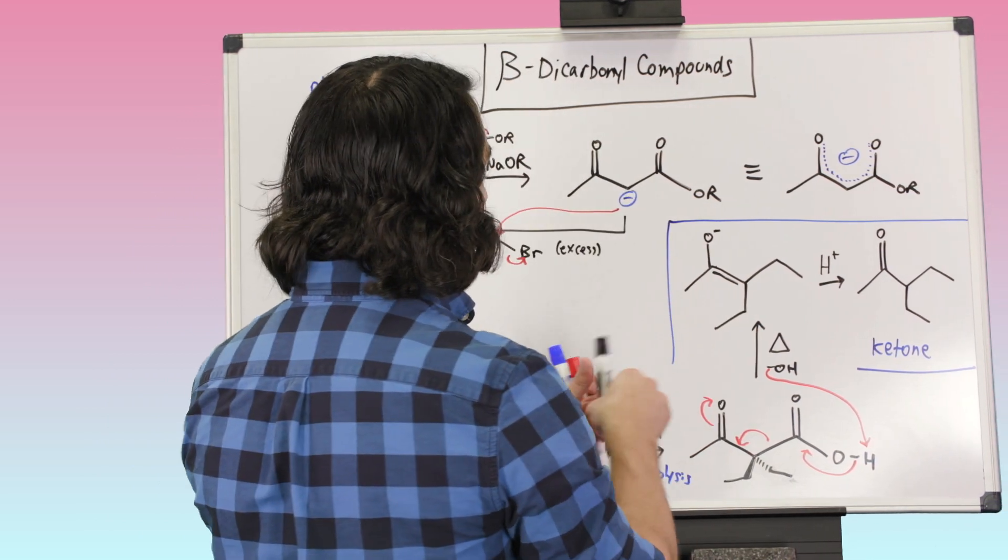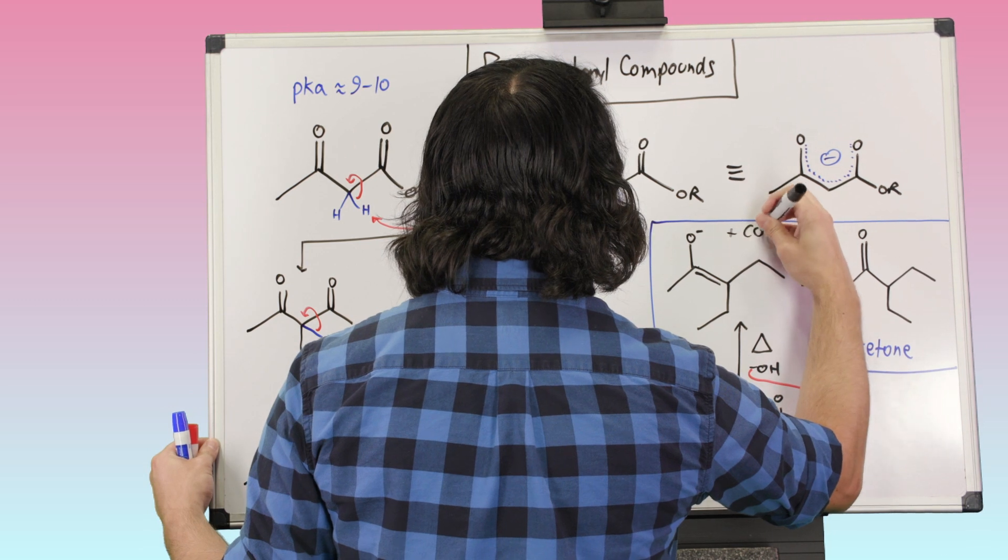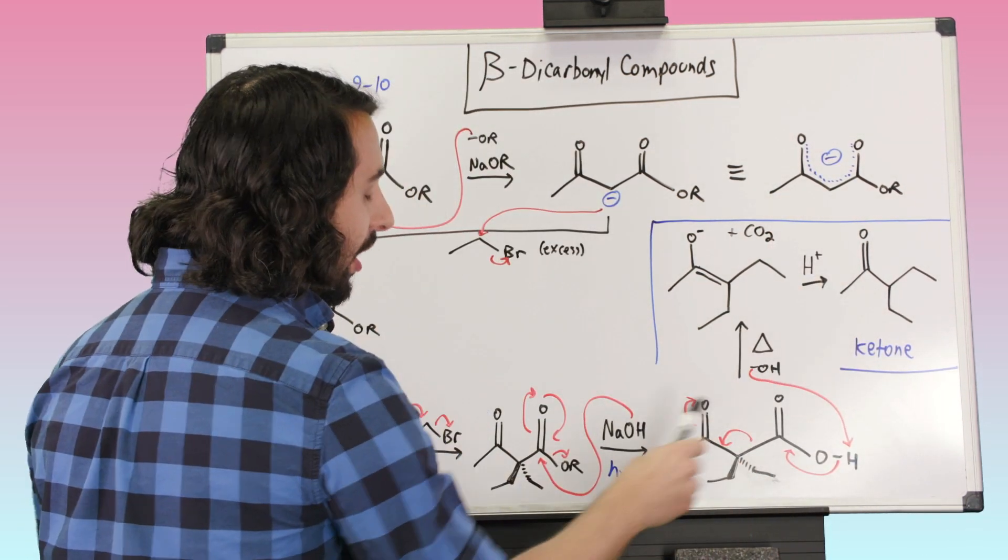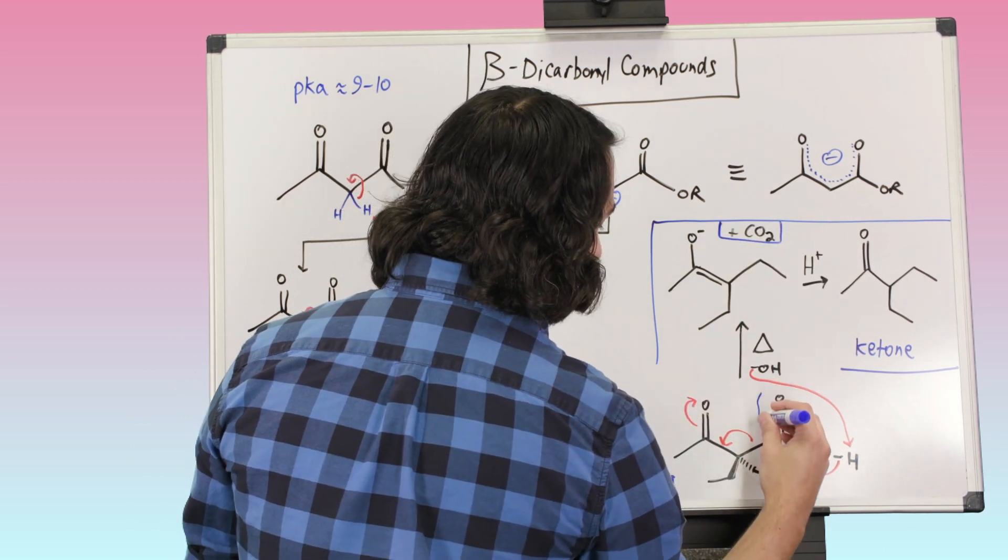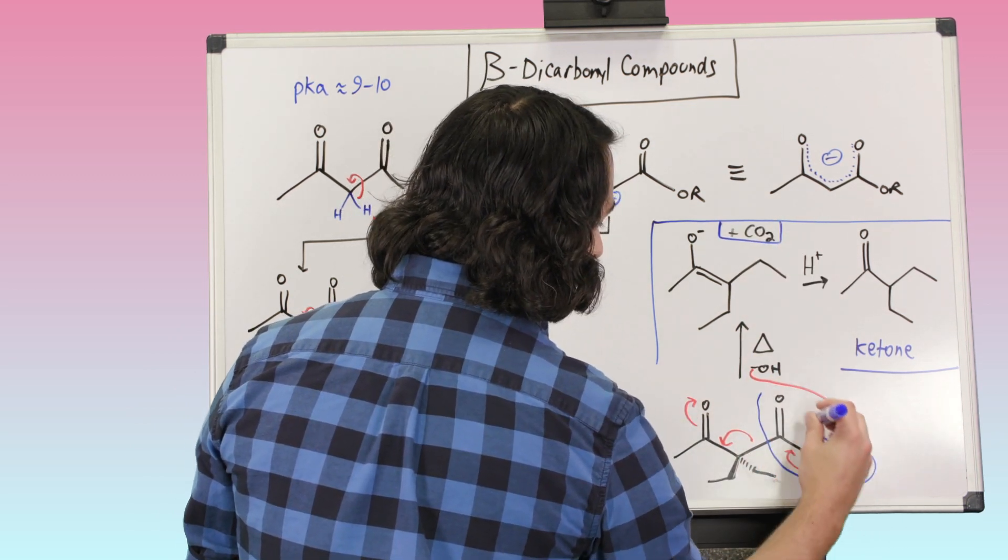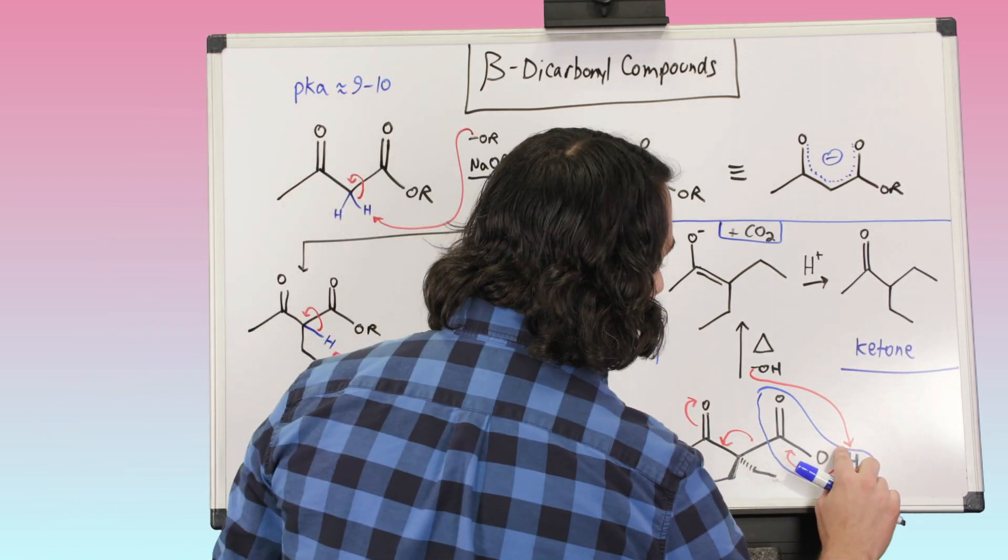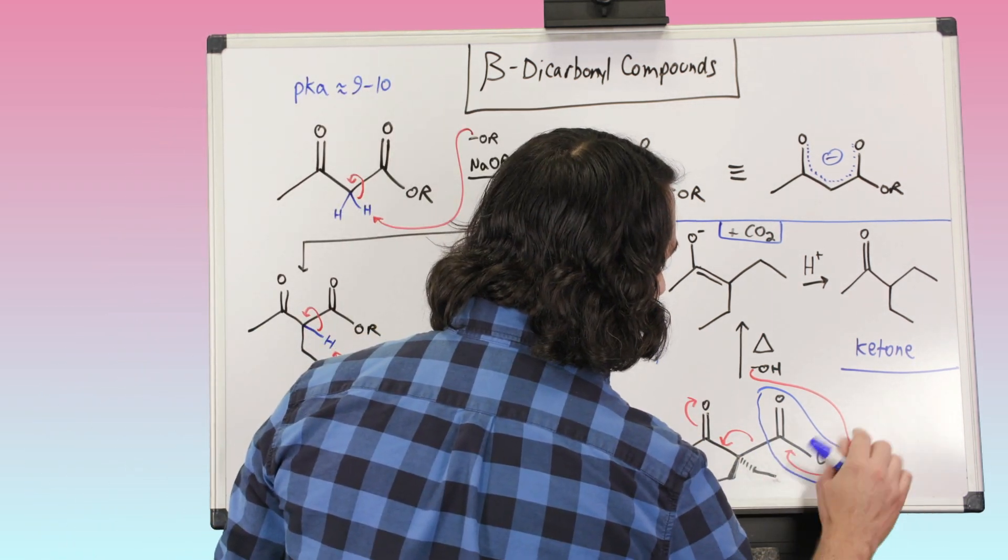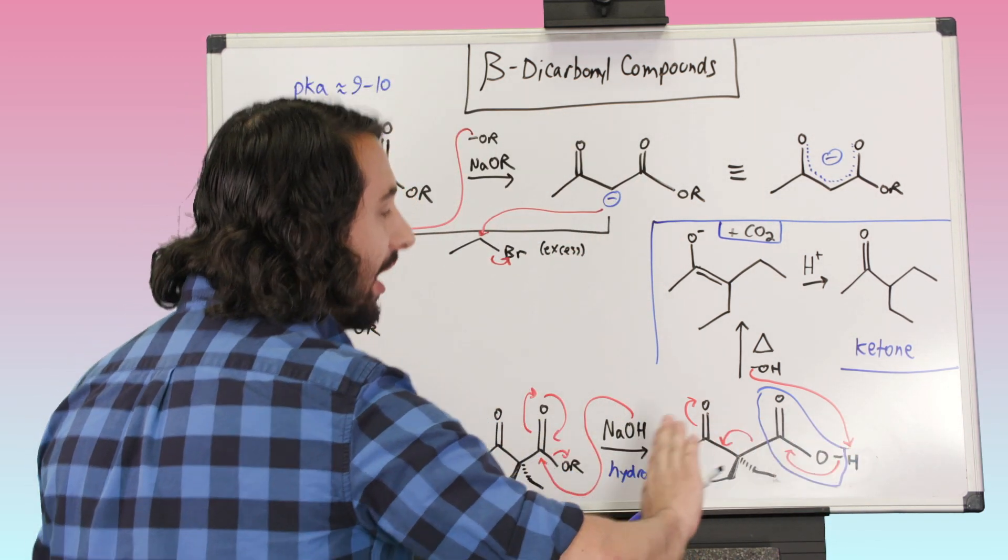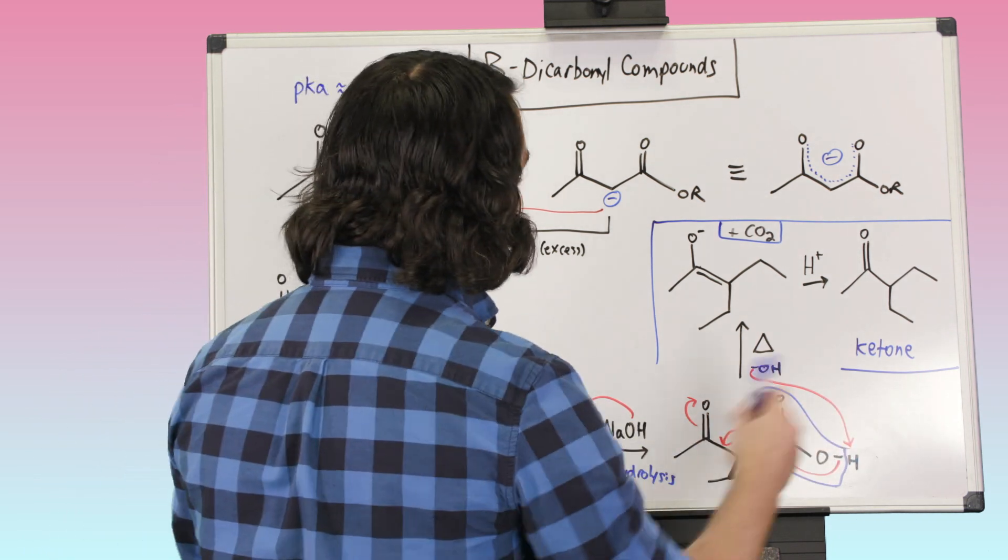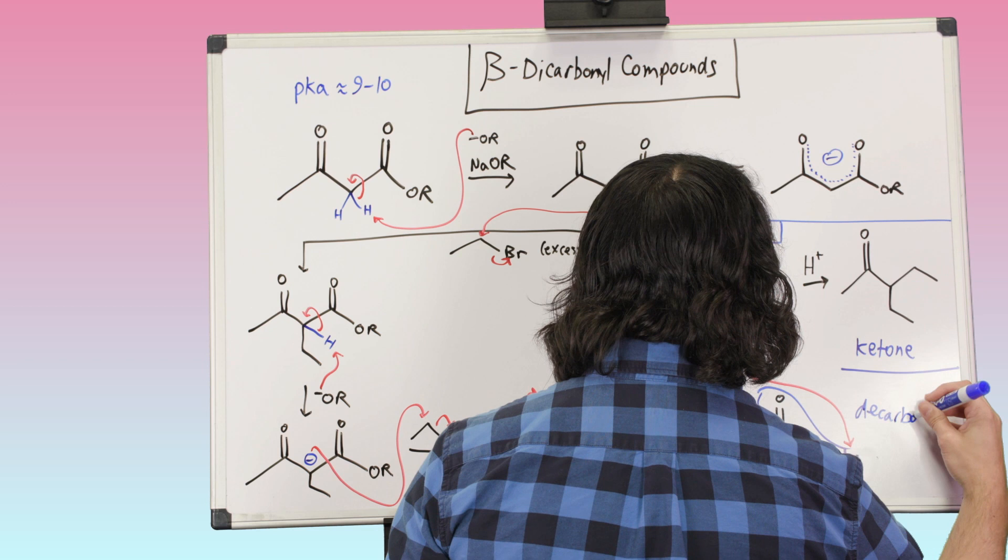So we are taking this proton and then this snaps shut and CO2 leaves. So we're going to get this and we're going to get, plus CO2. We are losing CO2. So let's say there's that and that's all this. We are losing a molecule. We're grabbing that hydrogen, but then this snaps shut and we lose CO2. So this is called decarboxylation.